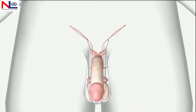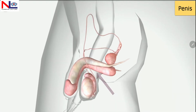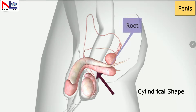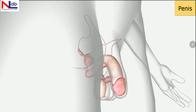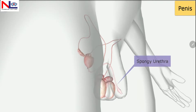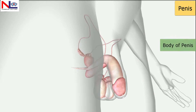In this lecture, I'm going to discuss the supporting structure of the male reproductive system — the penis. As seen in this animation, it is cylindrical in shape and is composed of the root, the body, and the glans penis. Within this structure is the spongy urethra, making it a common passageway for the ejaculation of semen as well as for the excretion of urine.